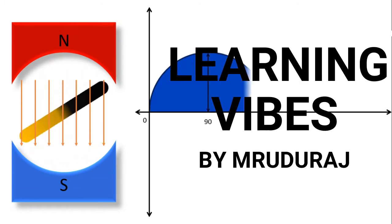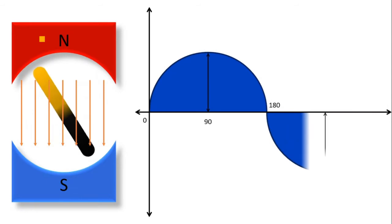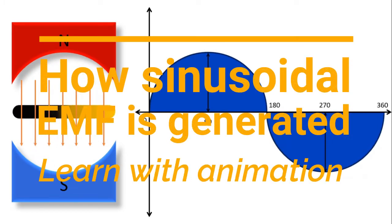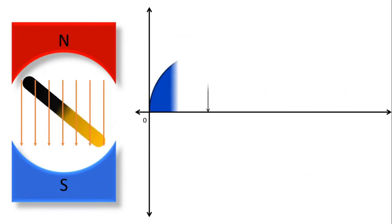Hello everyone, today we are going to learn how a sinusoidal EMF is induced in a generator. To understand this, let's first clear the basic concept. Imagine that we are having a magnetic field as shown in the display.